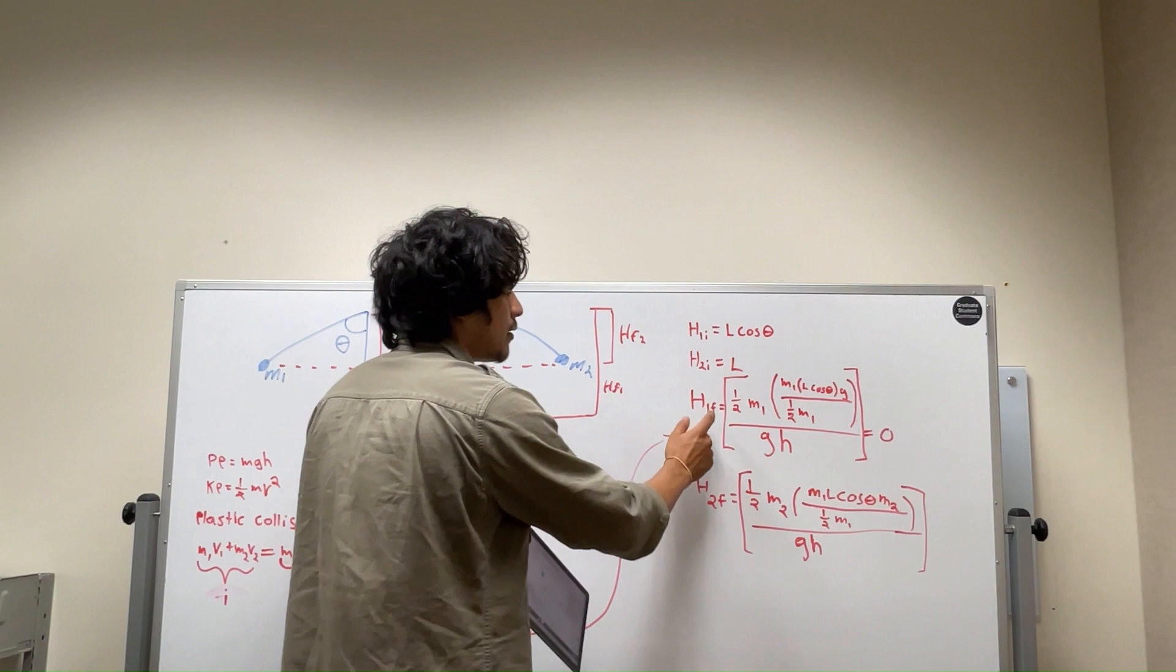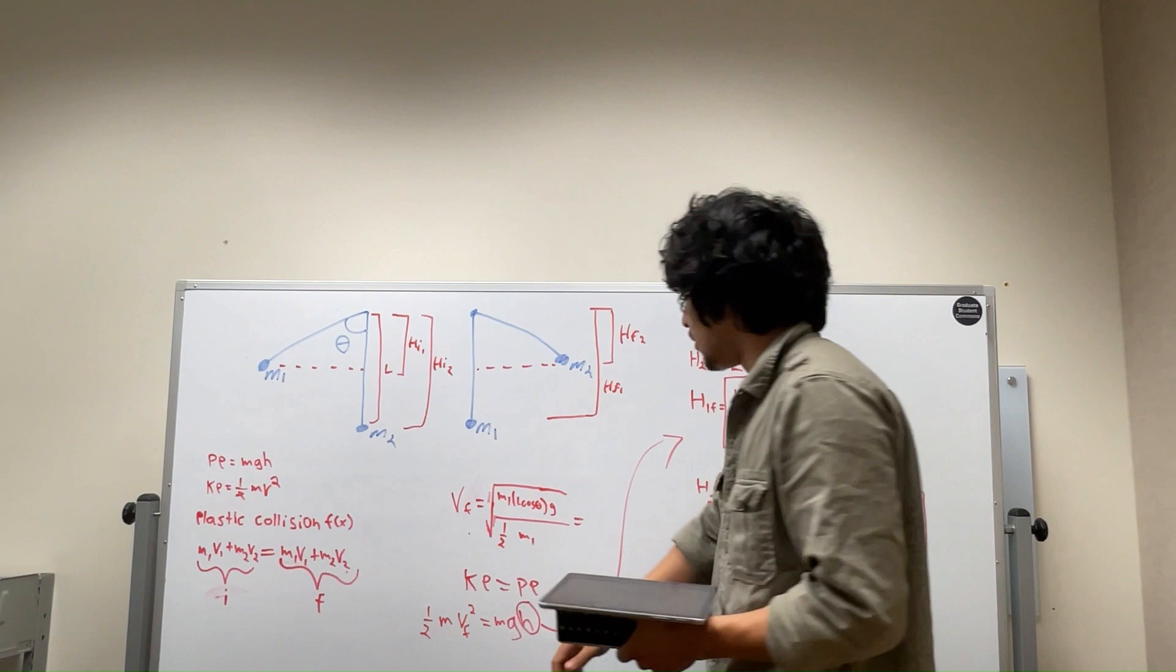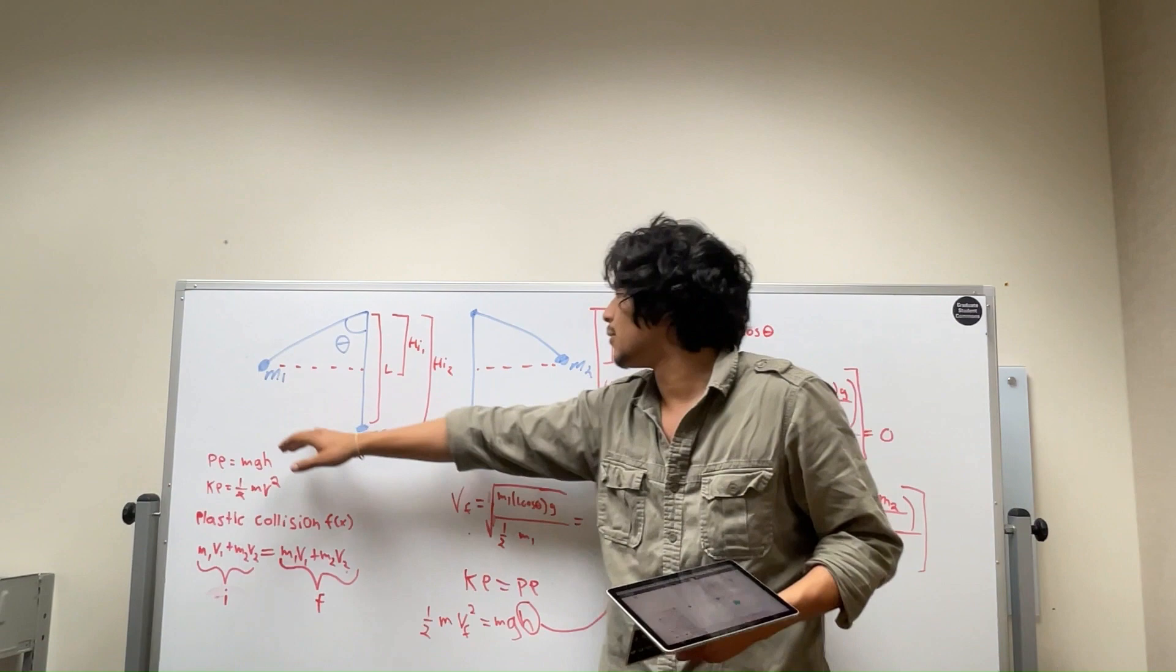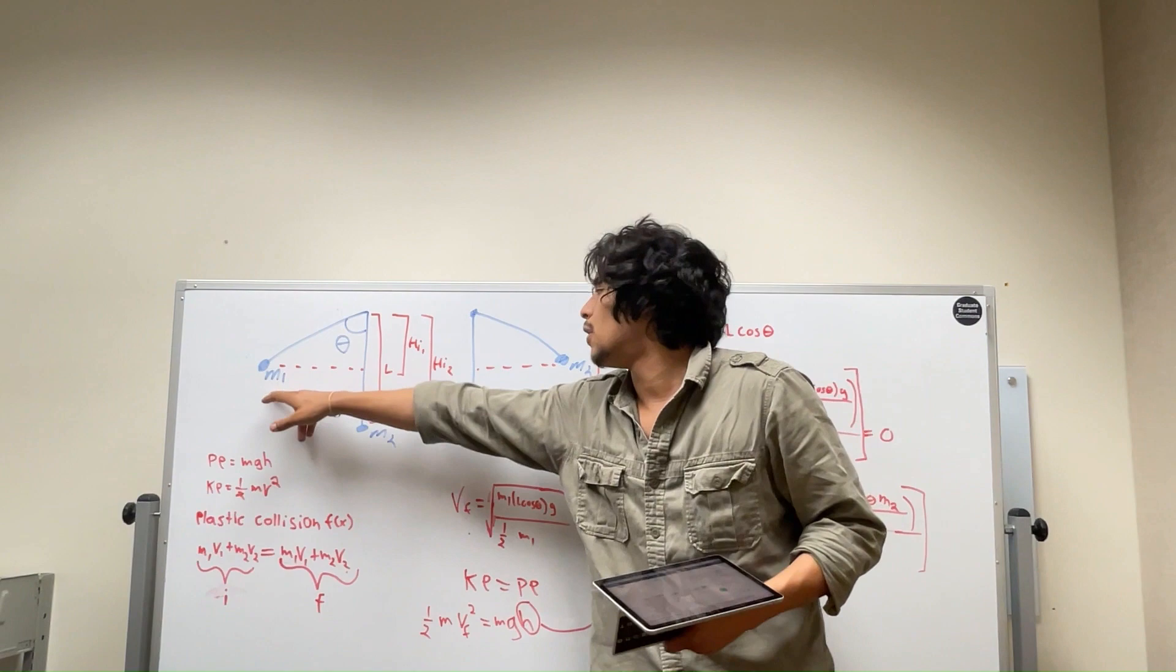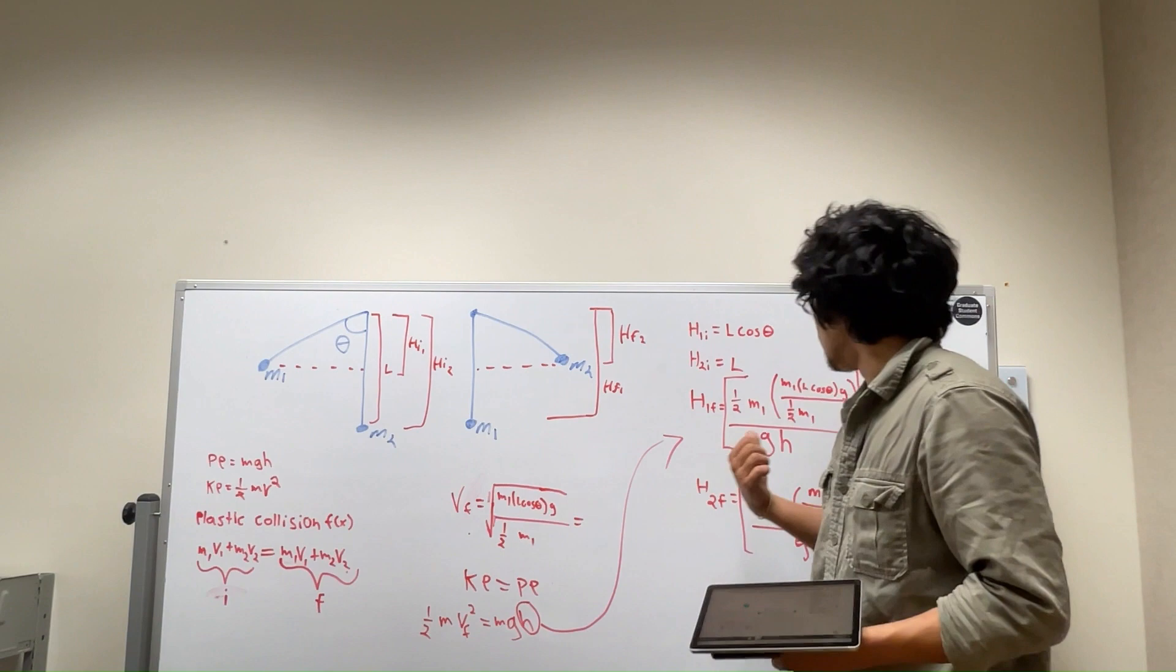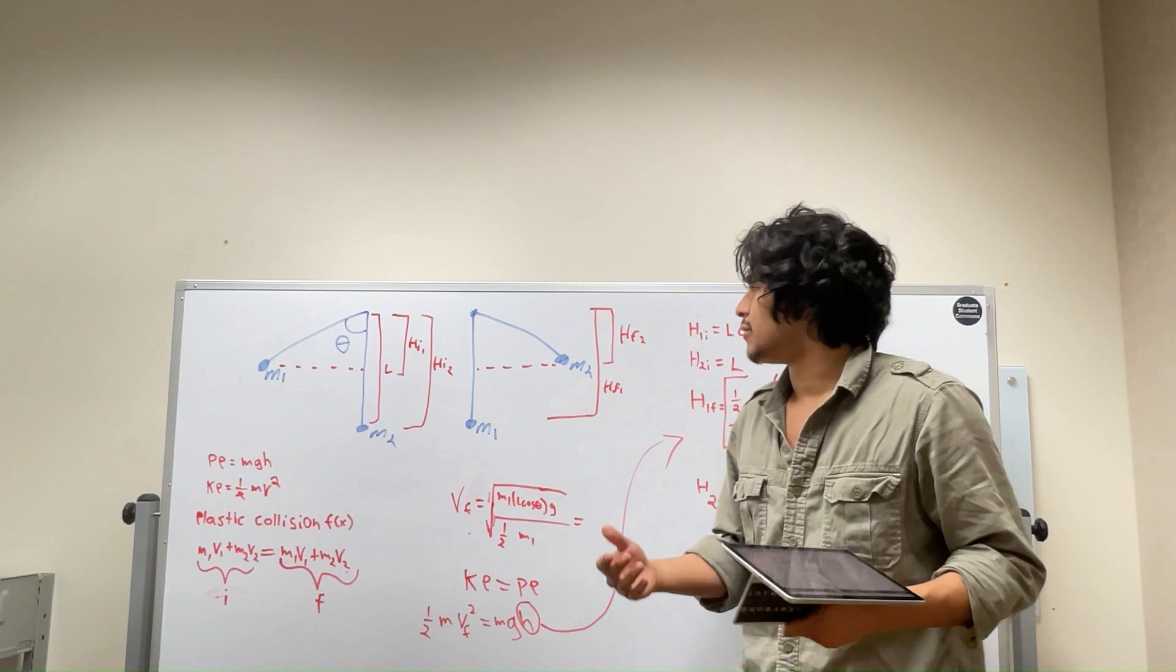However, if we still plug everything in, height 1 and height 2 will still both be the same. Same thing goes for velocity as well. If mass 1 is greater than mass 2, then the velocity of mass 2 will be a lot higher. If it was smaller than mass 2, then the velocity will be a lot slower, thus correlating with this and correlating with that, just as well.